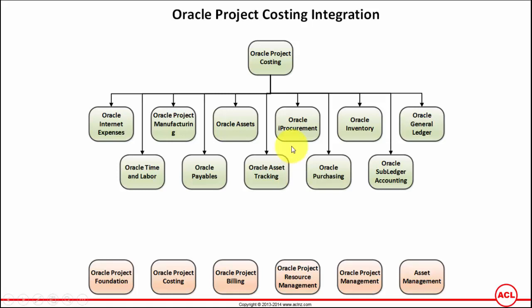iProcurement deals with scenarios such as when, as a project manager, you are requesting a project resource that is an external resource like a contractor. For that, you raise a requisition related to the project, which is used to create a purchase order that is sent to a supplier to get a contingent worker on board. The time and expenses incurred by that contingent worker would be paid by Oracle Payables, but the cost of those expenses would be reflected in Oracle Project Costing.